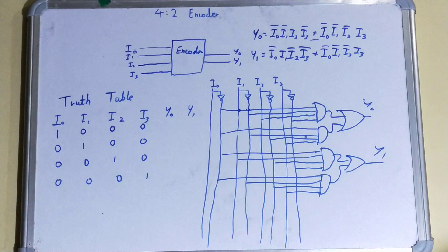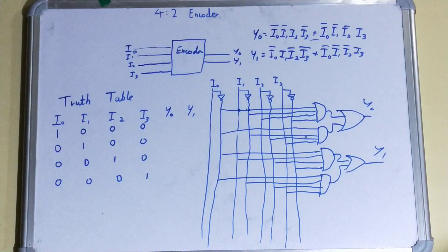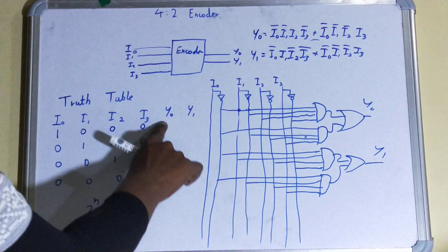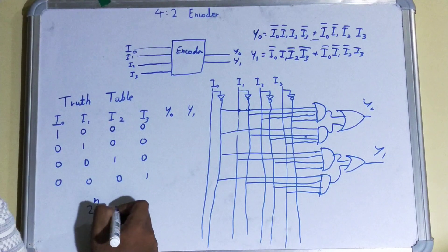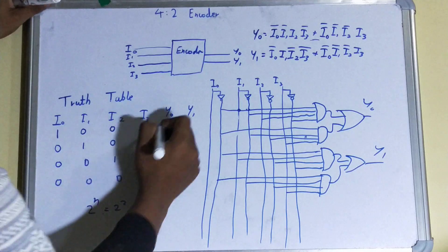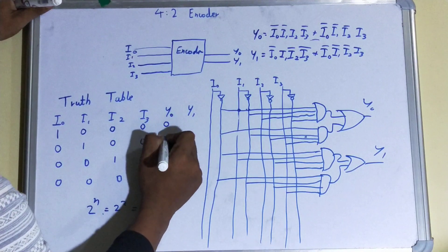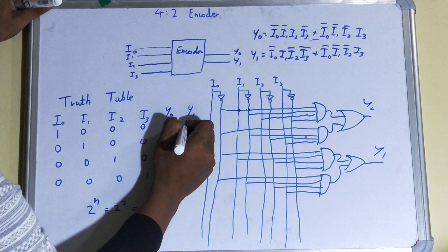Now the question is: what will be your output? For calculating output or writing your output table, you remember for predicting the set of inputs, you use 2 raised to power n, right? So here your outputs are two, so it will be 2 to the power 2, which equals four.